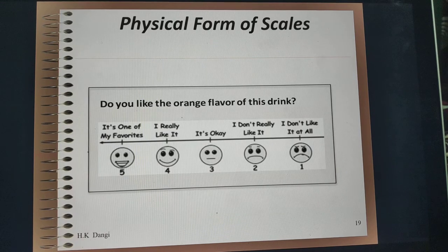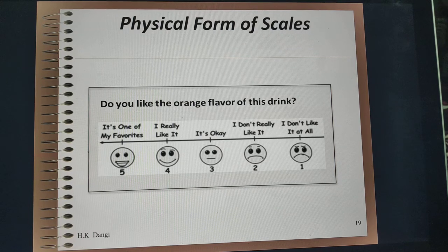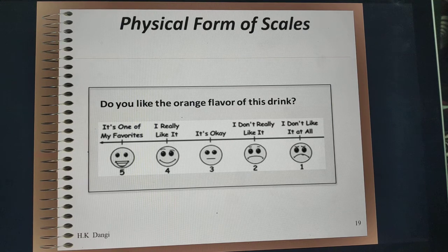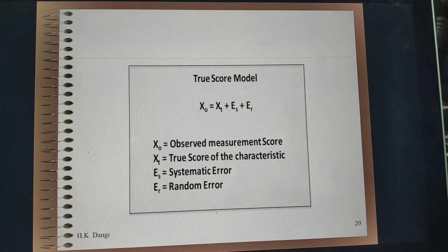These days another scale getting popular is the physical form of scale. For example, when you visit a restaurant, after dining the restaurant asks for feedback using emojis — whether you liked the food or not. Similarly when traveling by cab you rate your driver, or when you avail any service you give a rating. That is the physical form of scale.